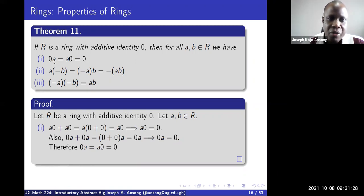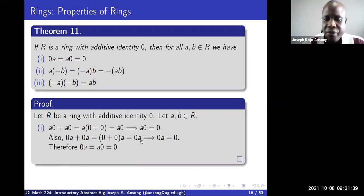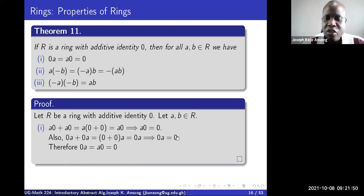Now we want to show that zero times A is also equal to zero. We take zero times A plus zero times A, and apply the right distributive law, factorizing out A to get (zero plus zero) times A. Since zero plus zero is zero, this gives us zero times A. Again, adding an element to itself and getting the element back means it must be the identity, so zero times A equals zero. That proves Part I.